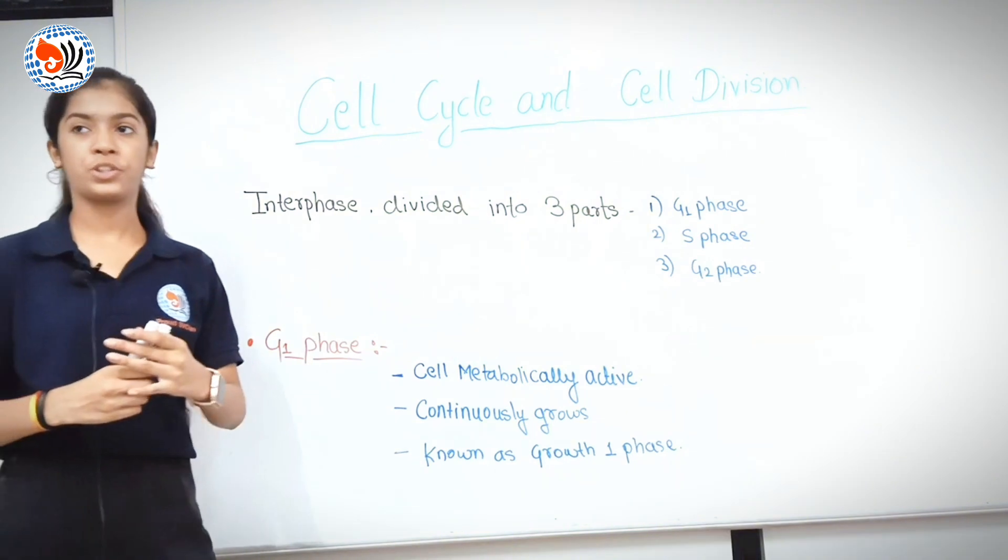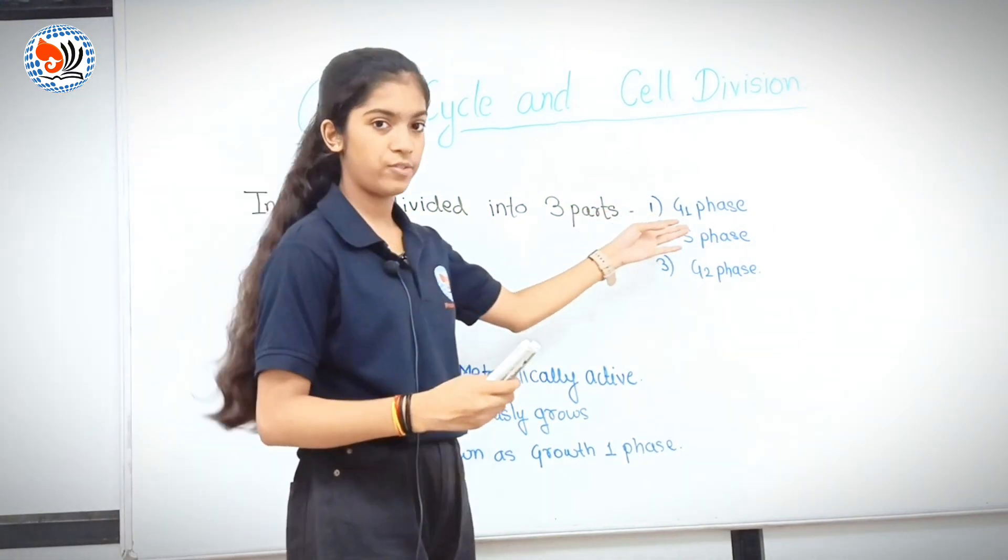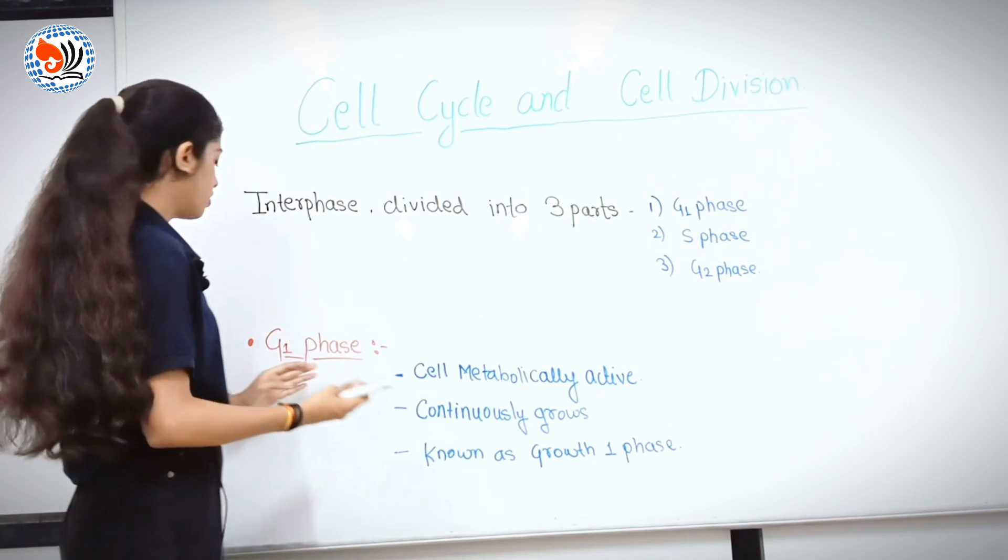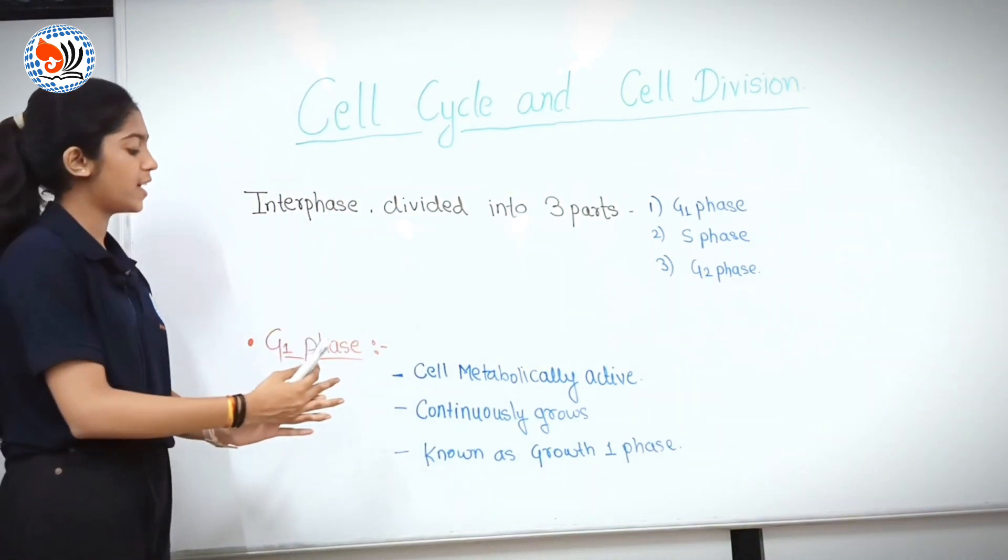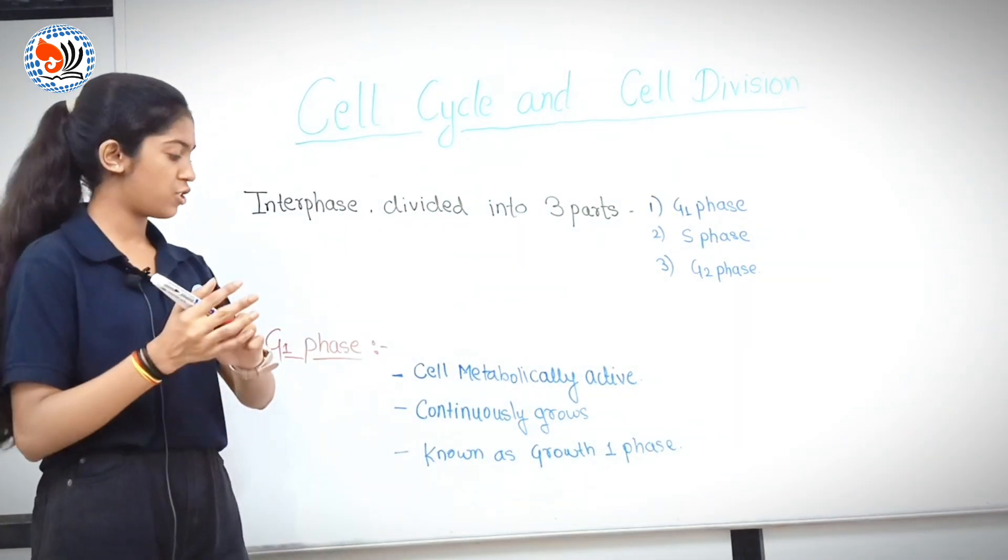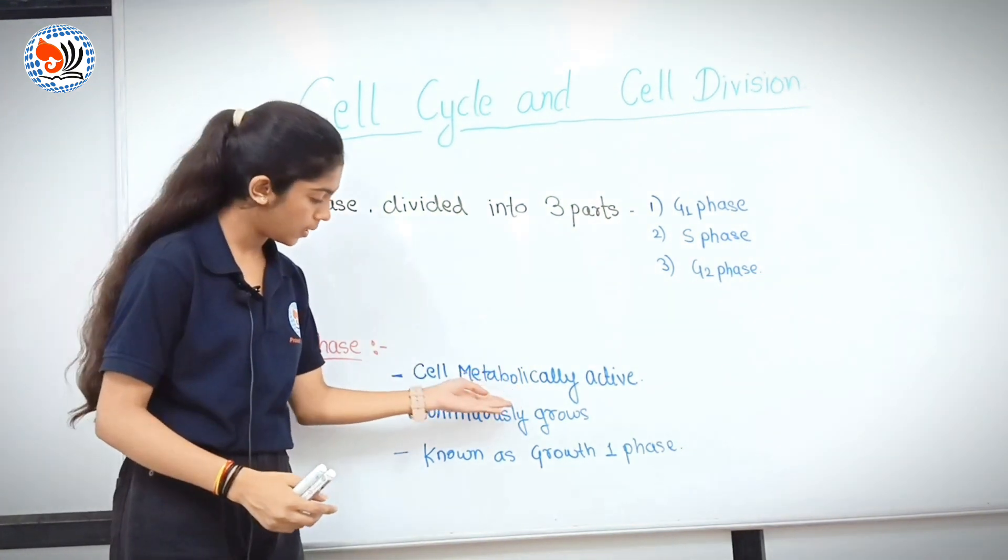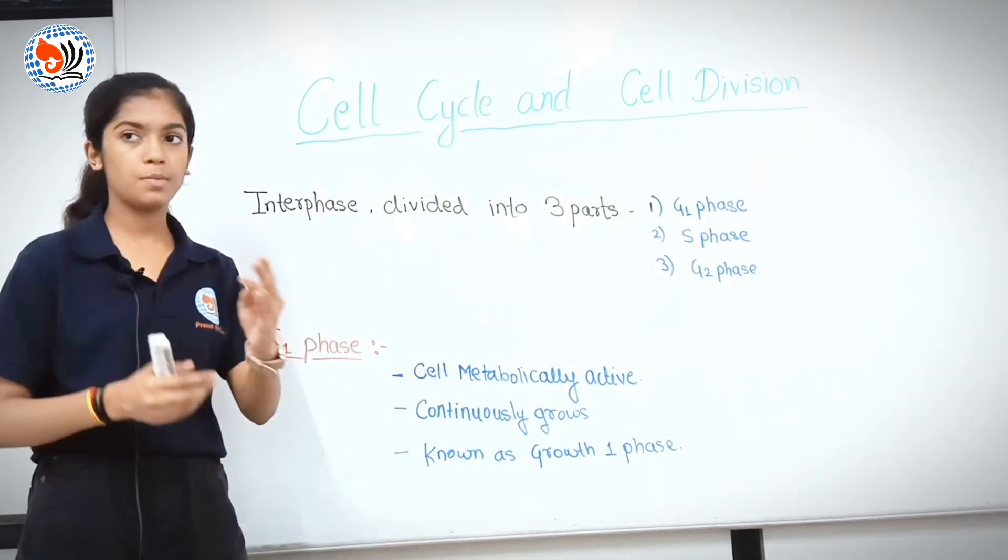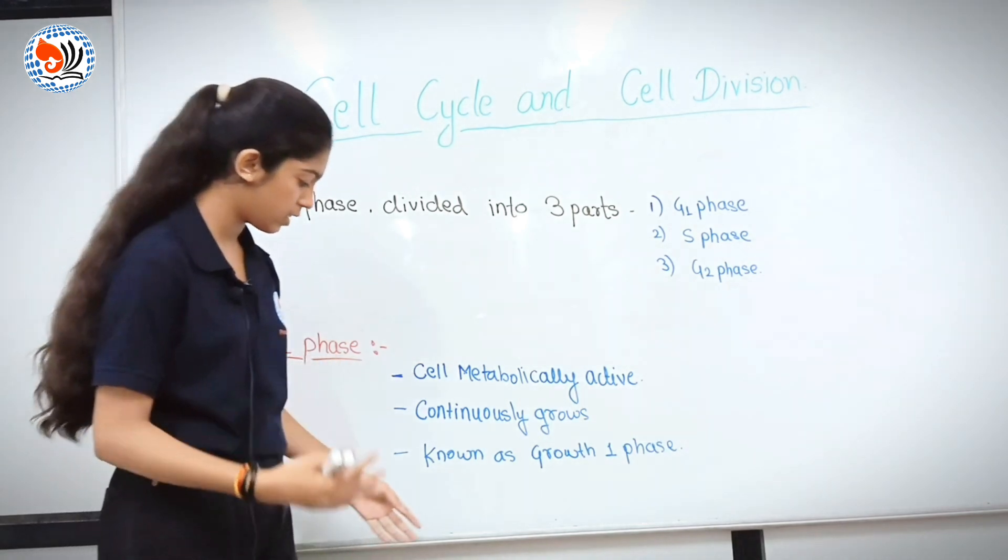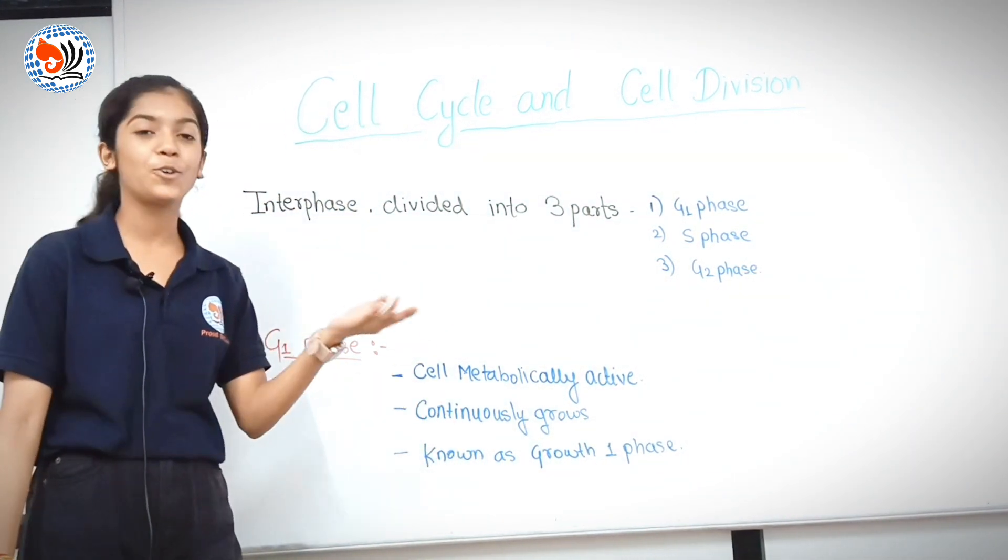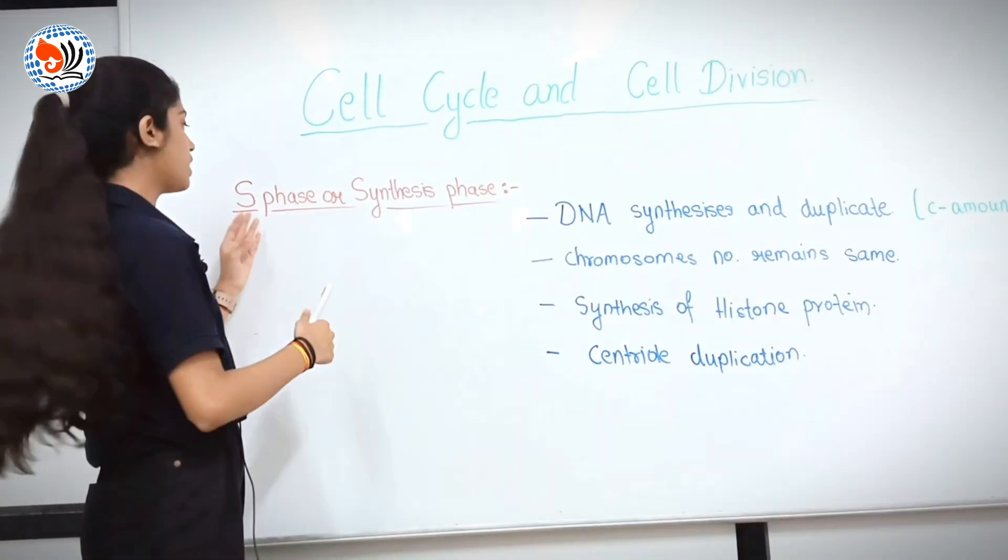Interphase is divided into three parts. First, G1 phase, second, S phase and third is G2 phase. G1 phase is an interval following mitosis and cell communication, in which cell is metabolically active and continuous growth of cell size increase. And G1 phase is also known as growth phase.